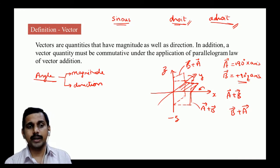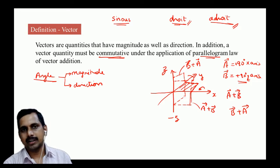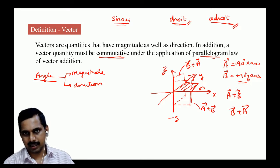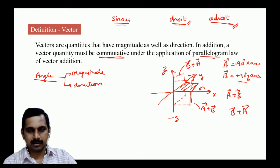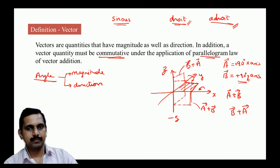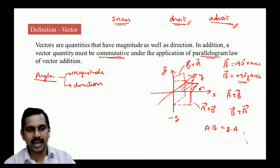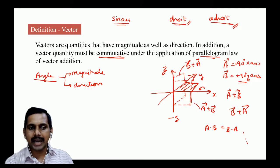For a quantity to be a vector, vector addition must be commutative: A plus B must equal B plus A under the parallelogram law. This applies to dot product and cross product as well. Although angle is not a vector, angular velocity is a vector.